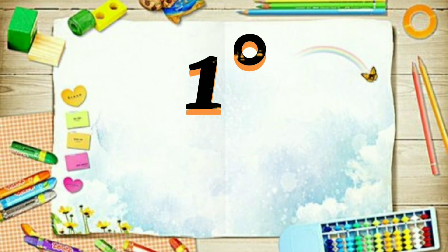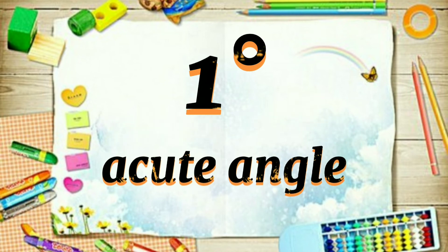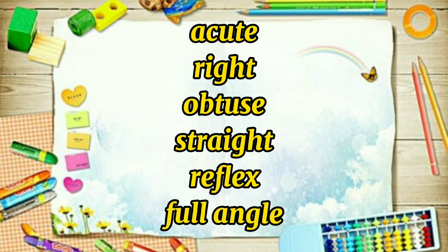And lastly, what about 1 degree? So 1 degree is an acute angle. Don't forget the types of angles: acute angle, right angle, obtuse angle, straight angle, reflex angle, and full angle.